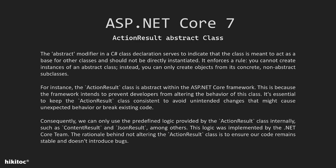The ActionResult class is abstract within the ASP.NET Core framework. This is because the framework intends to prevent developers from altering the behavior of this class. It is essential to keep the ActionResult class consistent to avoid unintended changes that might cause unexpected behavior or break existing code. Consequently, we can only use the predefined logic provided by the ActionResult class internally, such as ContentResult and JsonResult, among others. This logic was implemented by the .NET Core team, ensuring our code remains stable and doesn't introduce bugs.